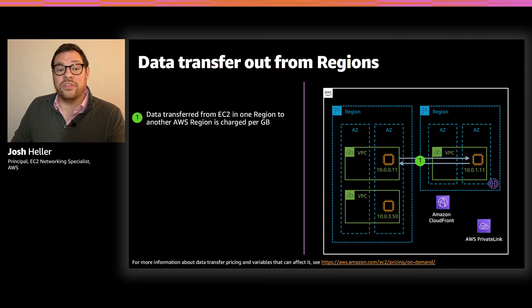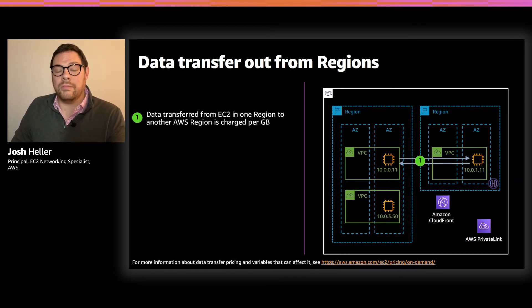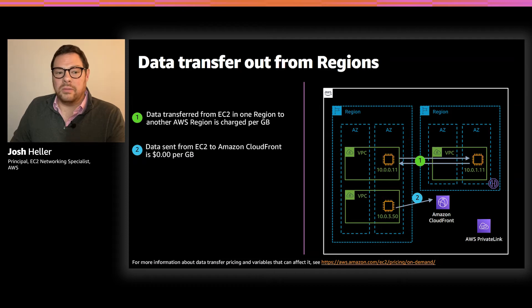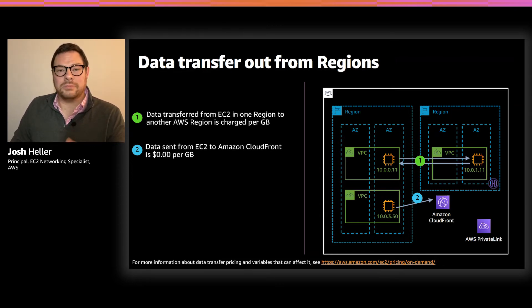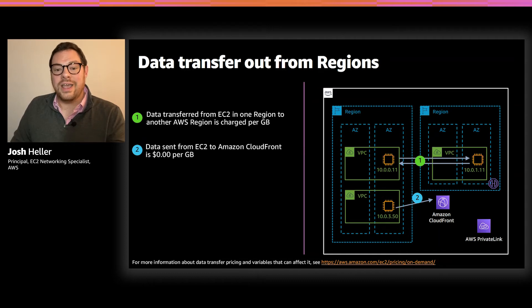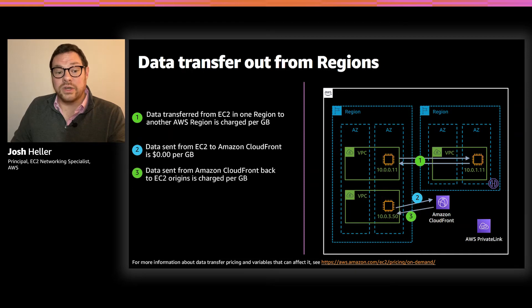Another common scenario arises when customers use Amazon CloudFront, Amazon's CDN or Content Delivery Network. CloudFront is available at more than 225 edge locations that connect to our global backbone. CloudFront works by caching data from sources like EC2, S3, and more into those edge locations. When you're populating data from an AWS source to CloudFront — an operation we call origin fetch — there's no charge for data transfer. However, for data sent from CloudFront edge locations back to EC2 or other origin types, there is a per-gigabyte charge assessed. Take a look at the CloudFront website for more detail and current pricing.